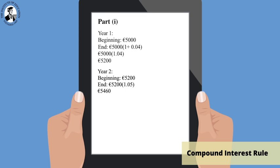Now, for year 2, whatever we finish year 1 with becomes the principal at the beginning of year 2. So the value of the investment at the beginning of year 2 is 5,200 euro. To find the value at the end, seeing as the rate of interest for the second year is 5%, we multiply 5,200 by 1.05, which we find is 5,460 euro.